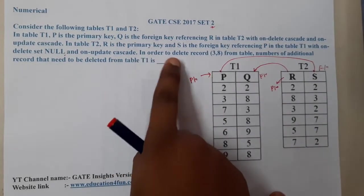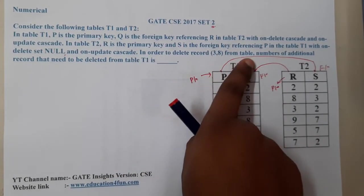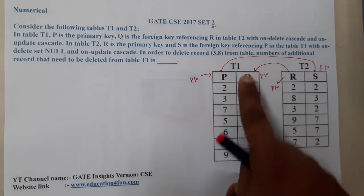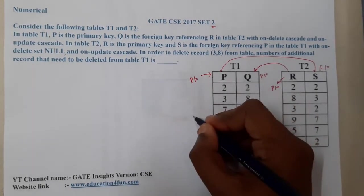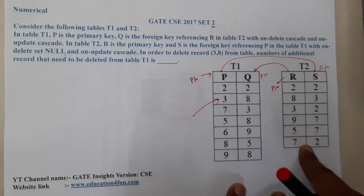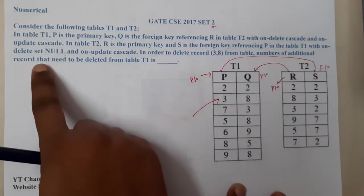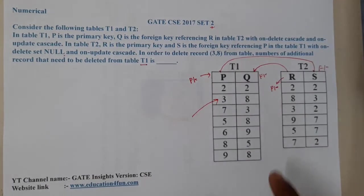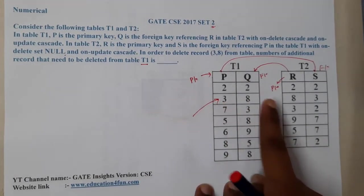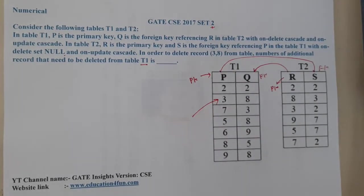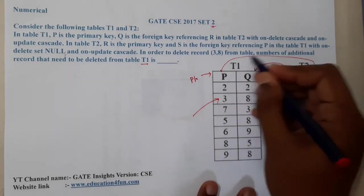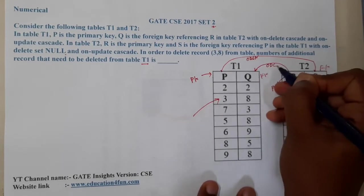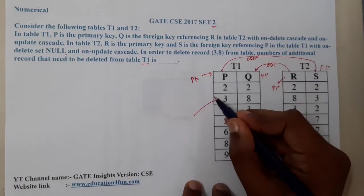The question asks: in order to delete the row (3, 8) from the table, how many additional records need to be deleted from T1? The row (3, 8) exists in one table but not the other, so there is no confusion. The relationship between T2 and T1 is ON DELETE SET NULL, not ON DELETE CASCADE.